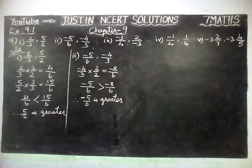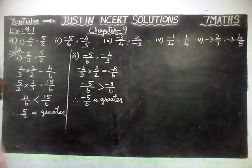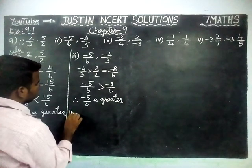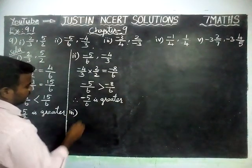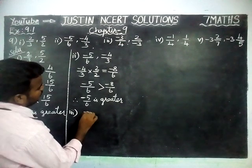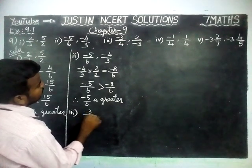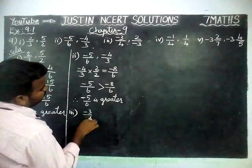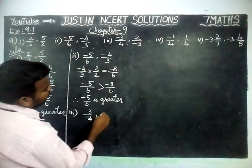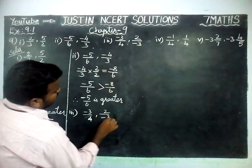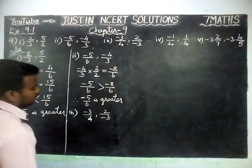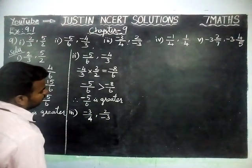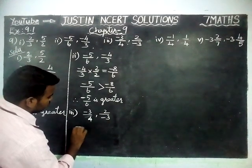The third question is -3/4 and 2/(-3). Here also, signs are different and denominators are different. We are going to convert into equal denominators.